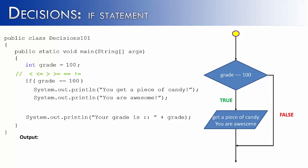If we walk through this program right now, I would get to the conditional, find out that it's true, and then the program would output you get a piece of candy and you are awesome. Then I would go on with the program and do what it always does and print out your grade is 100.